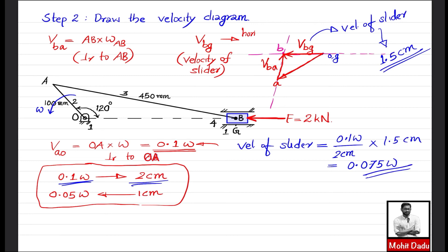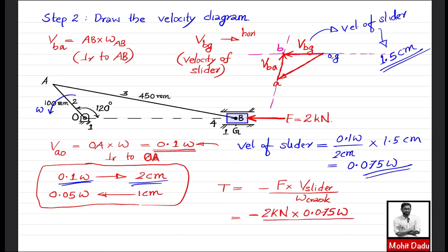Now applying the Principle of Virtual Work expression: T = −F·v_slider / ω_crank = −(2 kN × 0.075ω) / ω. The ω terms cancel, giving T = −0.15 kN·m. This is the torque to be applied on the crank for equilibrium.